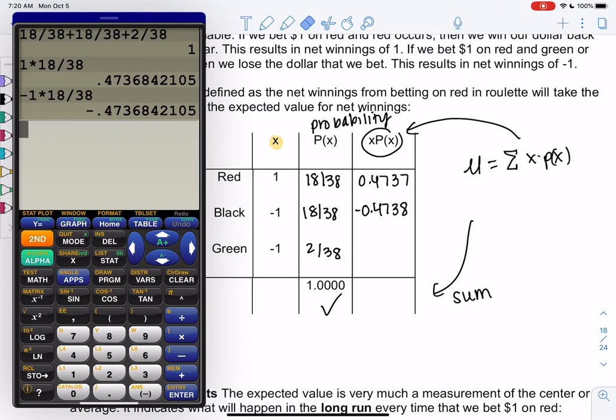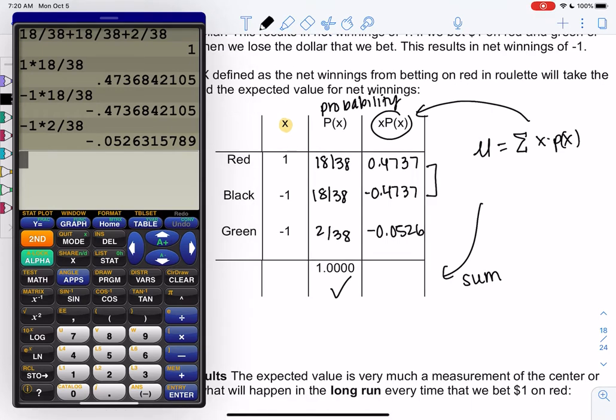So negative 0.4737, same exact number. And then we'll do the last thing. So negative 1 times 2 over 38, we get negative 0.0526. And then if we add these up, what I notice without using my calculator is that the first two cancel out and make 0. So the sum is actually just negative 0.0526. But if you didn't see that, you could check that. 0.4737 plus negative 0.4737 plus negative 0.0526. Yep, see?